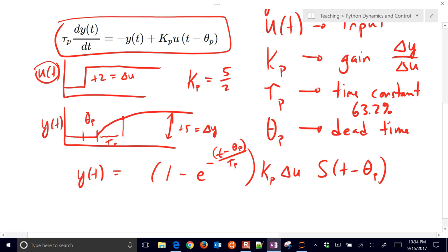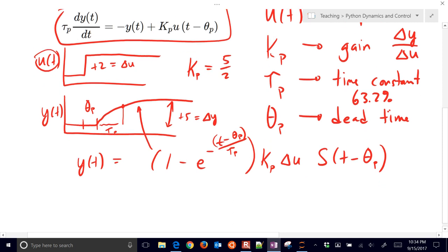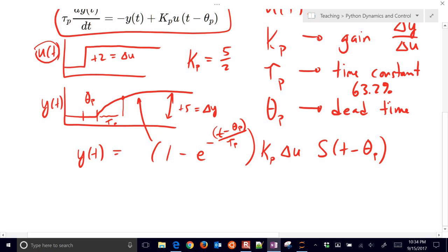So here's my analytic solution. If I just plotted it, it would look like that right there. So one of the things I want to show is this dead time, or sorry, with no dead time. Let's just assume no dead time first of all. And I just have 1 minus E to the minus T over tau P times Kp delta U.